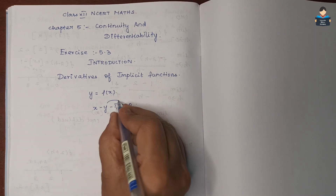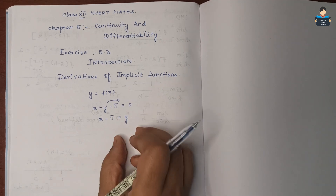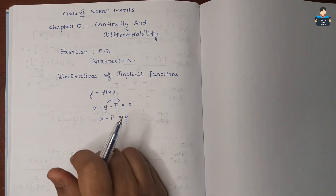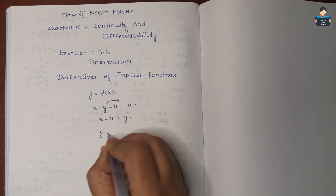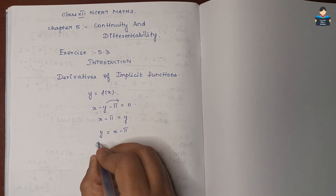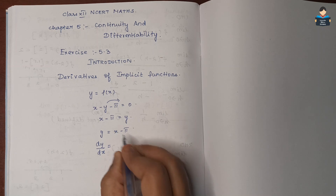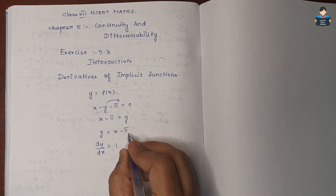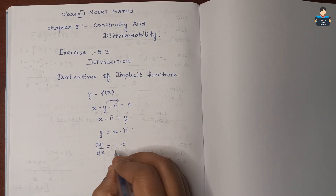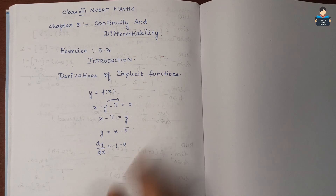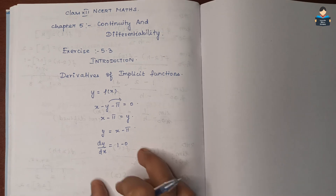Here, we take the y term: x minus π = y, so y is expressed in terms of x. Now differentiating with respect to x, we get y = x minus π. So differentiating, dy/dx: differentiating x gives 1, and π is a constant so it becomes 0. Therefore dy/dx = 1.